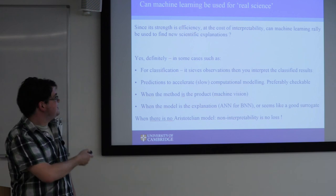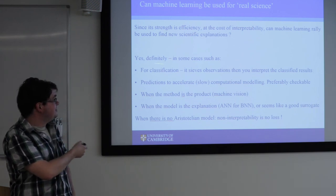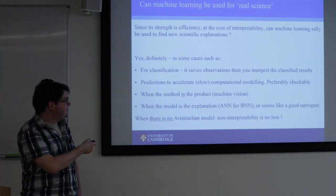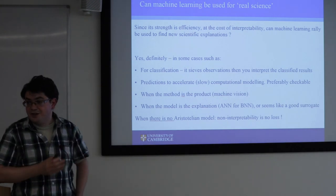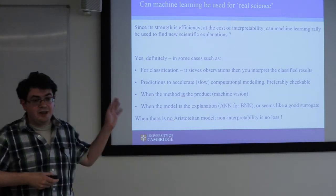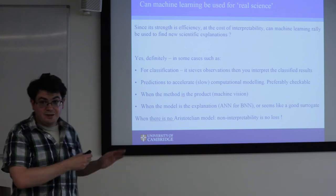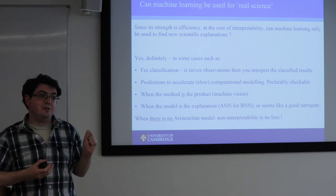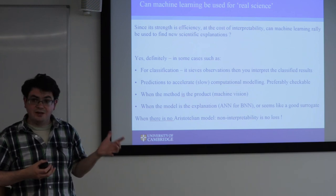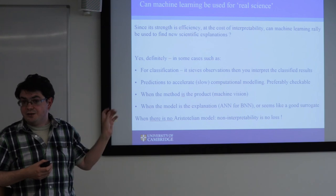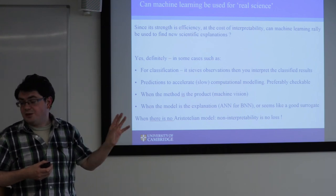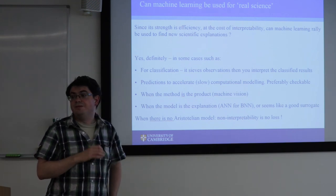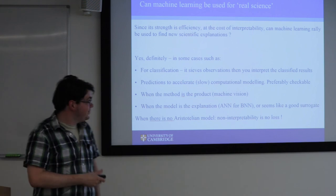Can machine learning be used for real science? Definitely yes. In some cases it's really good at classification. When it's most useful is when there isn't a simple underlying physics or true model of what's going on, but you think there is some complex underlying process — then machine learning gives you an algorithmic method for predicting what that complex process does without you needing to understand it in some Aristotelian satisfactory way.